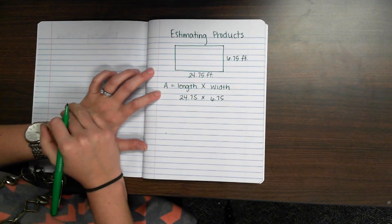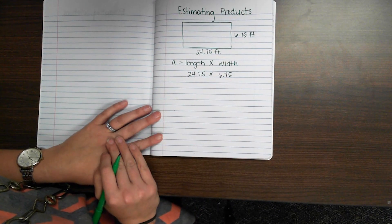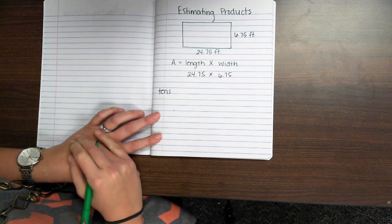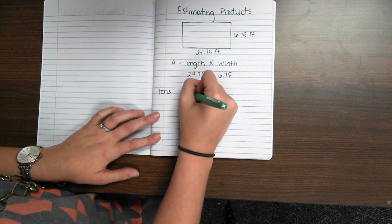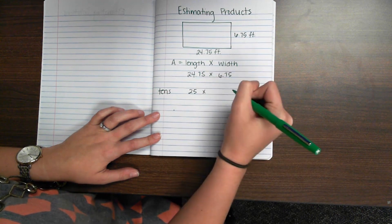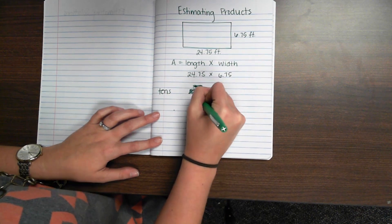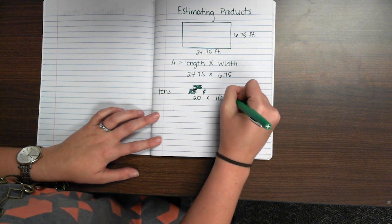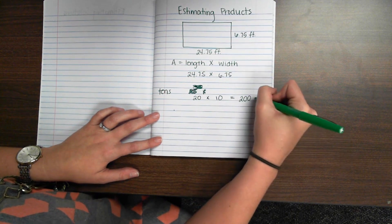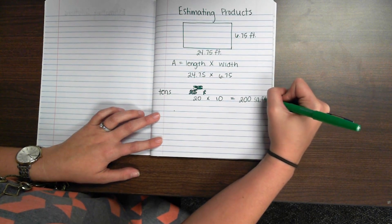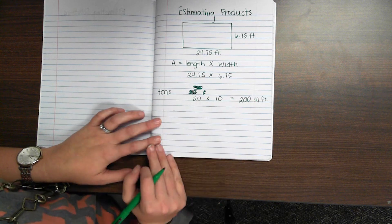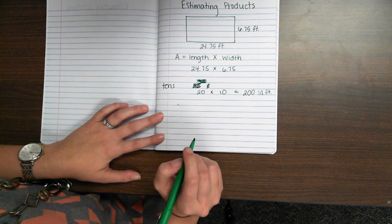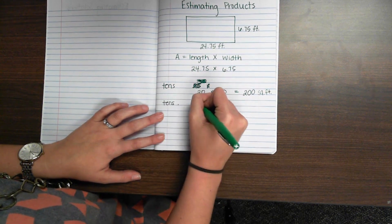So I would need to solve 24 and 75 hundredths times 6 and 75 hundredths. Since we're estimating, we don't need an exact answer. First, let's round each of the values to the nearest tens. 24 and 75 hundredths rounds to 20, and 6 and 75 hundredths rounds to 10. So 20 times 10 gives us 200 square feet. We know we need about 200 square feet, but I think I can get my estimate even more precise.